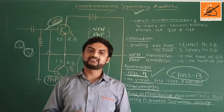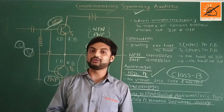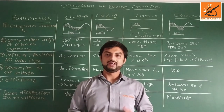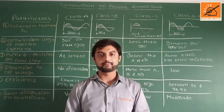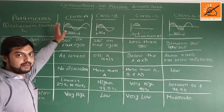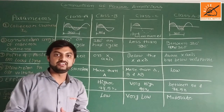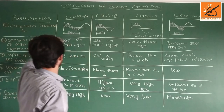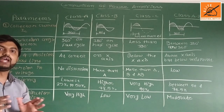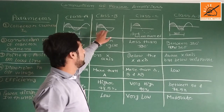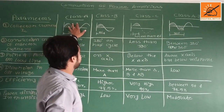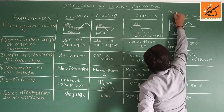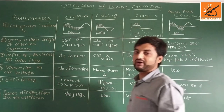Now we are going to check the comparison of different types of power amplifiers. Here are the parameters on which we will compare the power amplifiers: class A, class B, class C, and class AB — which you can also call push-pull amplifier. The first parameter we are going to compare is collector current IC.